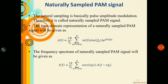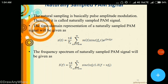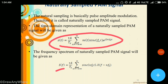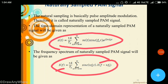Next is the naturally sampled PAM signal. Natural sampling is basically pulse amplitude modulation, so it is called a naturally sampled PAM signal. The time domain representation is: s(t) = (τ/Ts) · Σ m(t) · sinc(nFsτ) · e^(j2πFsτ), where the summation is from n = −∞ to +∞. The frequency spectrum is: S(f) = (τ/Ts) · Σ sinc(nFsτ) · X(f − nFs), where the exponential e^(j2πFsτ) becomes X(f − nFs) in the frequency domain.